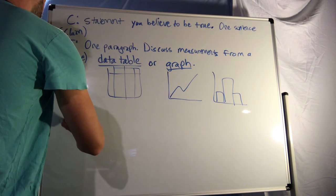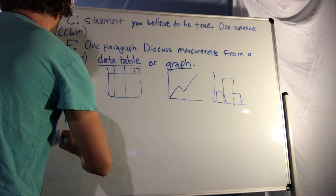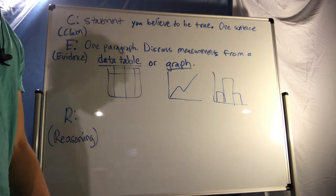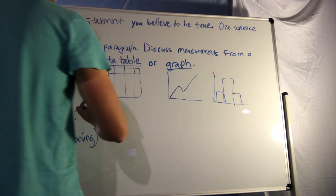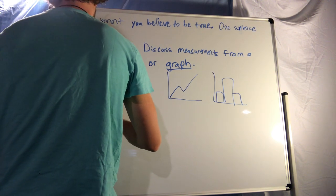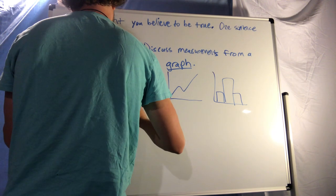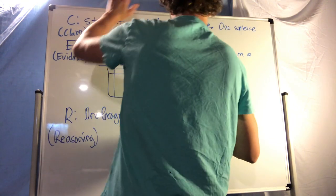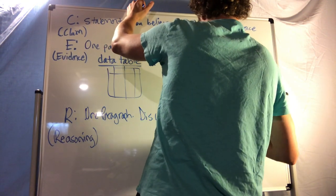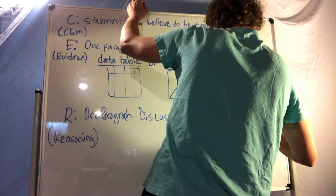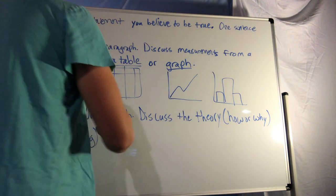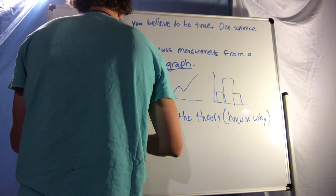Then comes R, which stands for Reasoning. It's one paragraph where you discuss the theory — the how or why — the theory that backs up your claim.